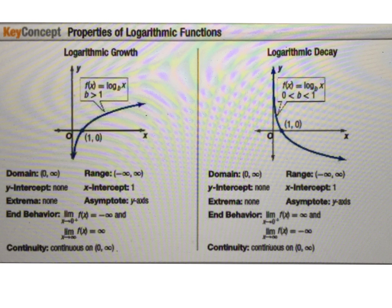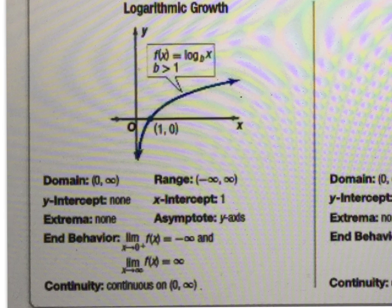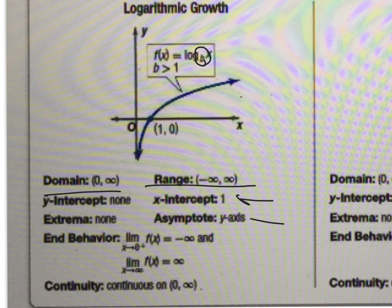All right, this is what the graphs look like. I graphed one for you on the first page. But if it's growth, meaning when you do a log, this base right here, base b, if it's bigger than 1, it's growth. That's what it looks like. That would be your domain, your range is all reals. There is no y-intercept because your y-axis is an asymptote. Your x-intercept is 1. Y-axis is an asymptote. In behavior, you can write left-end behavior like this when it approaches 0. We haven't really talked about that yet. I'm going to worry more about the right-end behavior. Continuity.